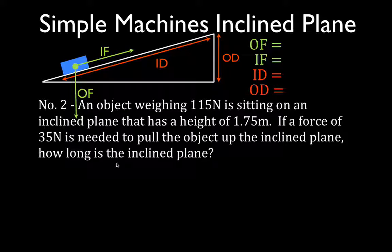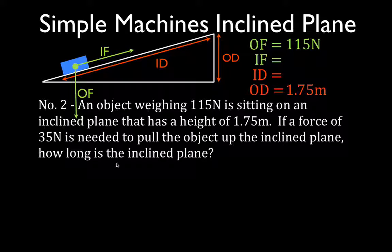Once again, I like to write down all four — output and input forces and distances — and fill in what I know. The object has a weight of 150 newtons: that's the output force. The inclined plane has a height of 1.75 meters: that's the output distance. The force we need is 35 newtons: that's the input force. And we want to know how long the inclined plane is — that's the input distance.